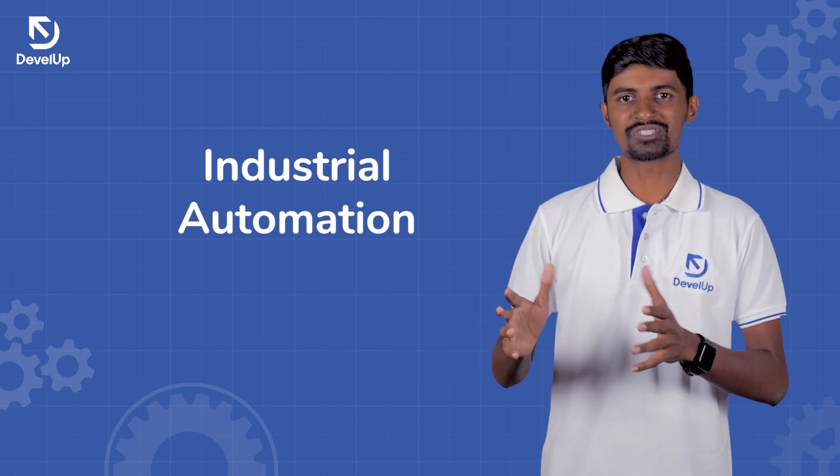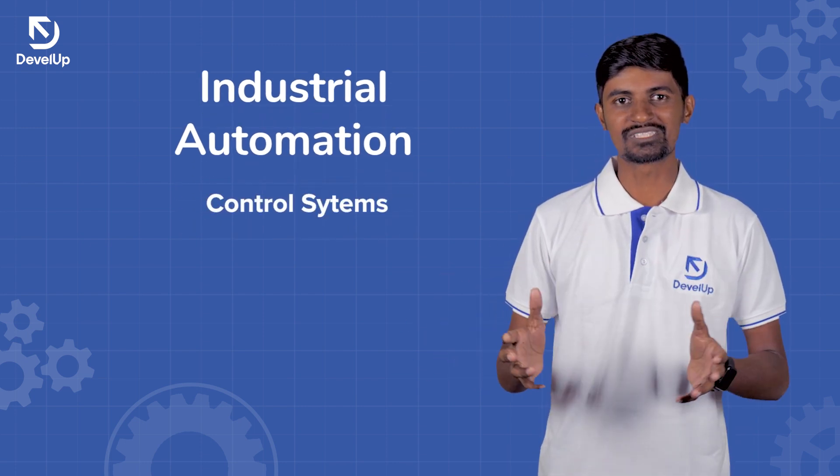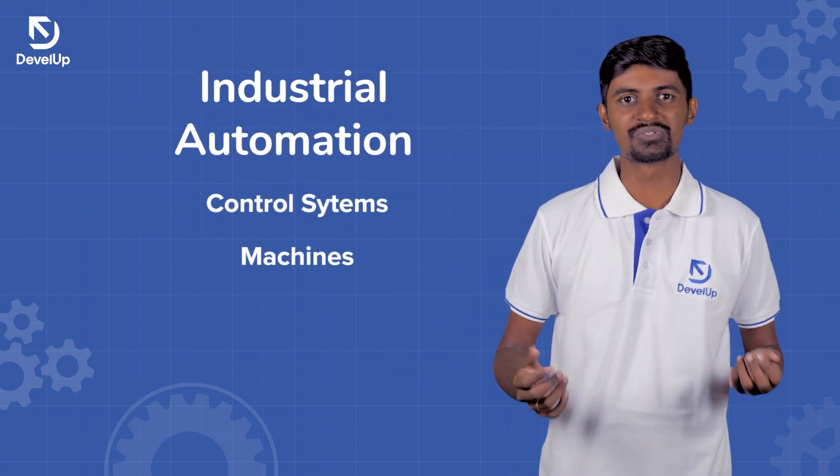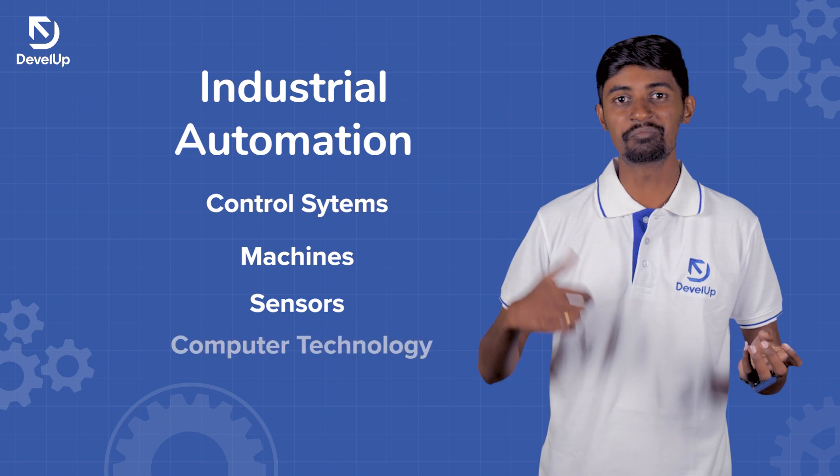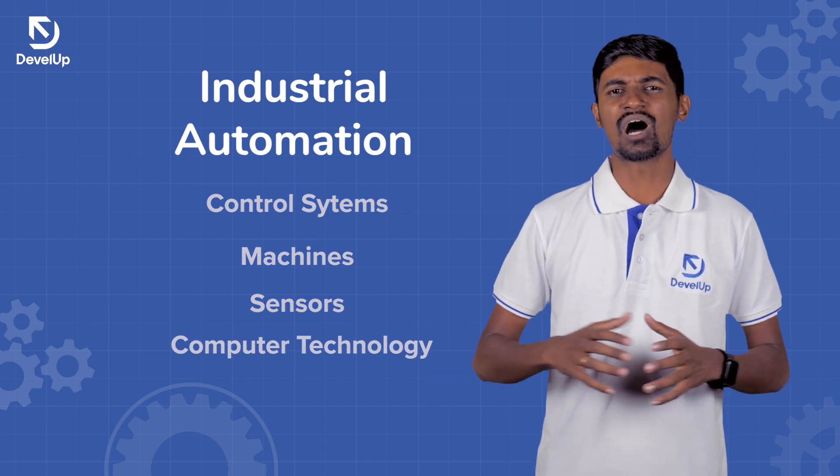Industrial Automation involves control systems, machines, sensors, and computer technology. That's the best process for producing a quality product.